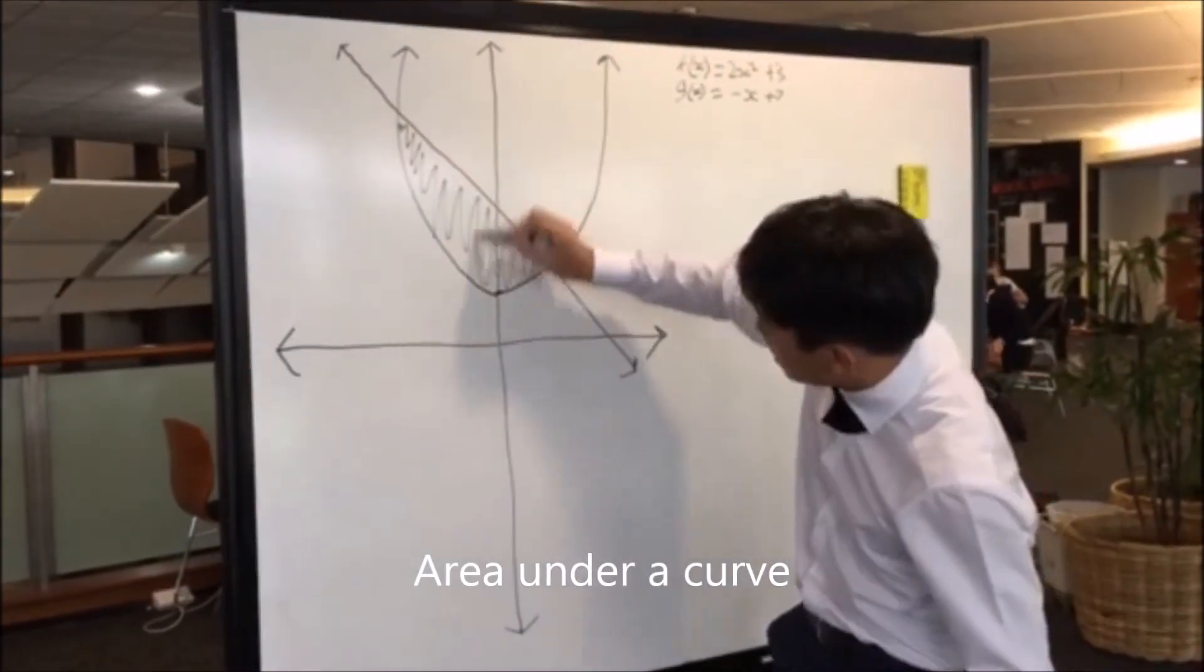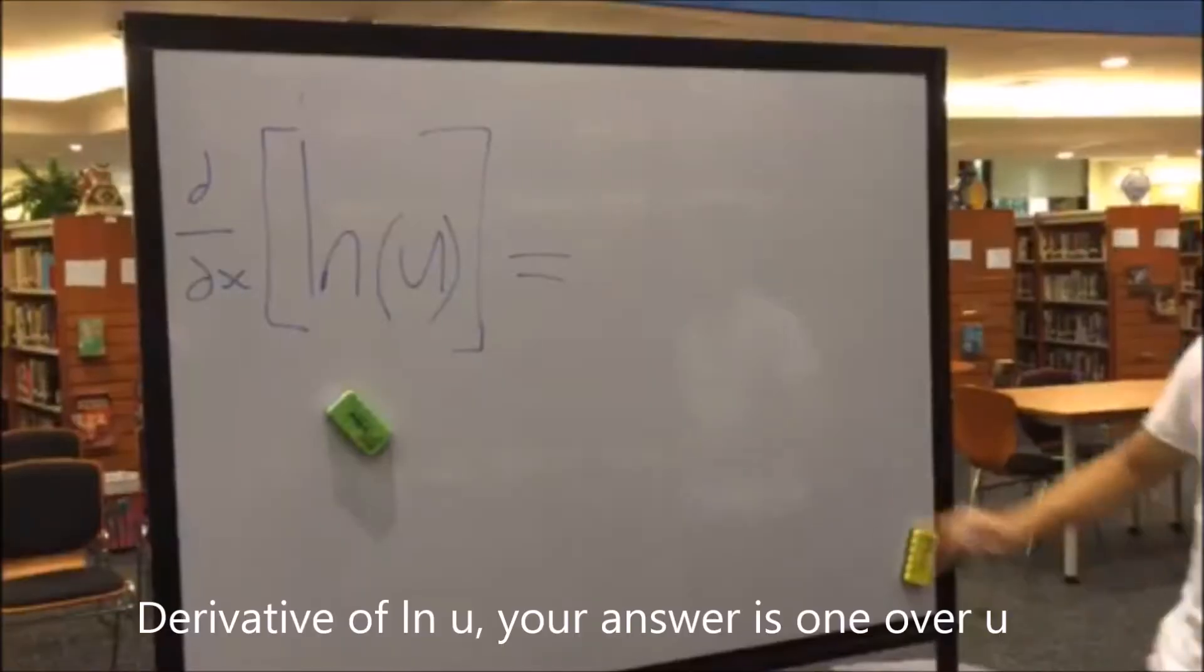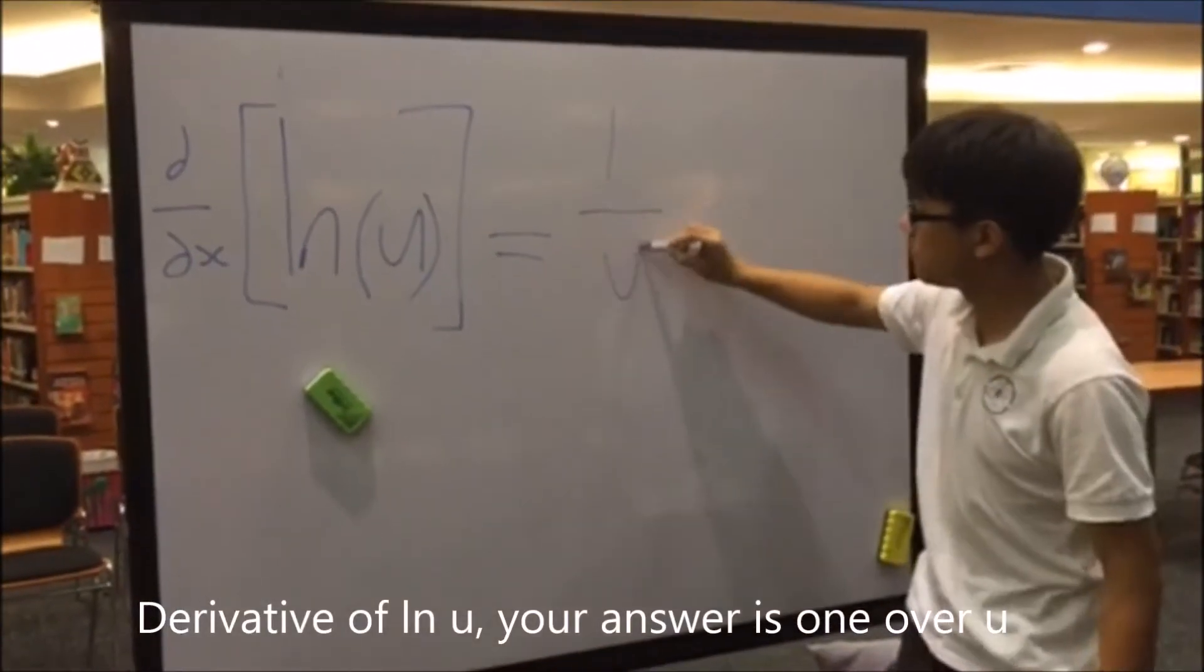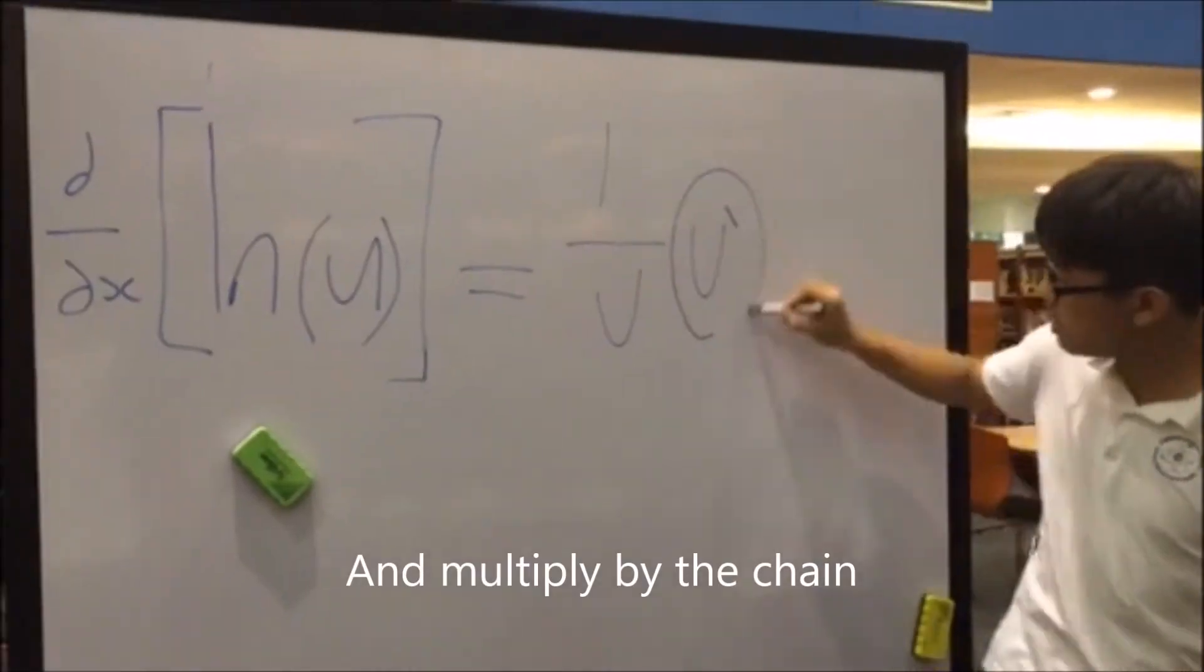Area under a curve, Riemann sums help you observe. Use of the constancy, find volume to the sum machine. Derivative of ln u, your answer is 1 over u. But always, always use your brain and multiply by the chain.